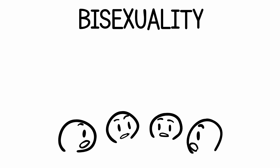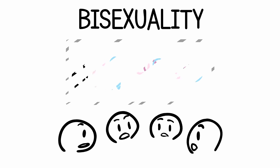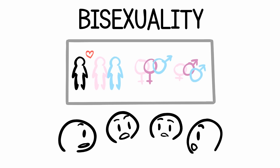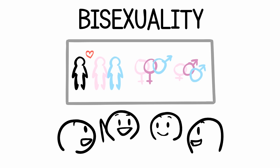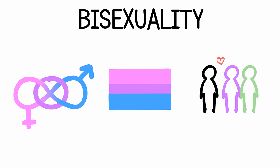1. Bisexuality. The definition for bisexuality is actually something that's debated. Originally, the standard definition was attraction to both genders. However, as understanding of gender has evolved, people have argued for an evolved definition of bisexuality. Some use the definition of attraction to your own and other genders, to incorporate non-binary genders within its definition.